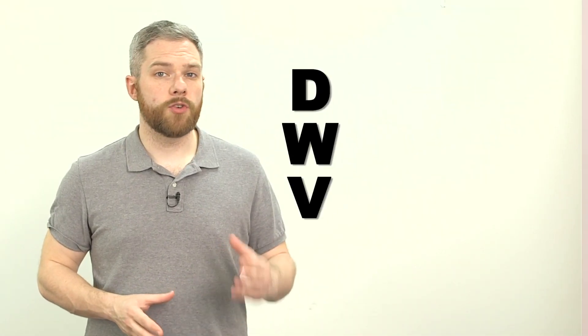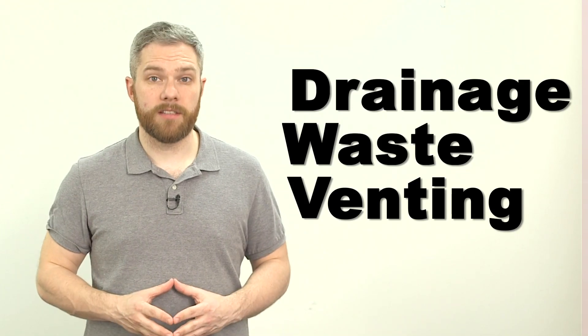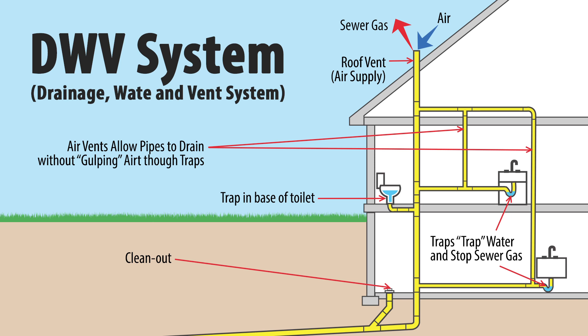DWV fittings are used for drainage, waste, and venting in residential and commercial sanitary systems. DWV systems maintain neutral air pressure in the drains, allowing the flow of water and sewage down drains through waste pipes by gravity. Because of this, it is critical that a downward slope be maintained throughout.